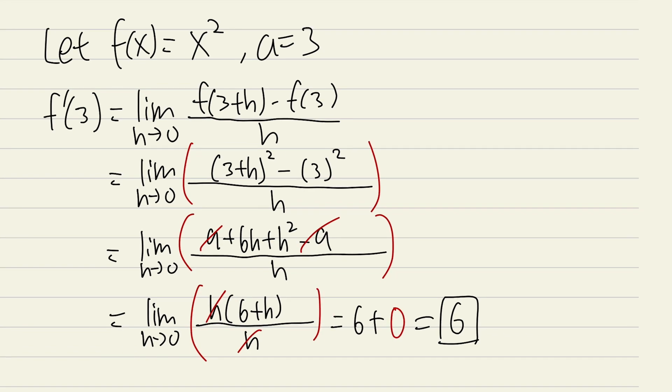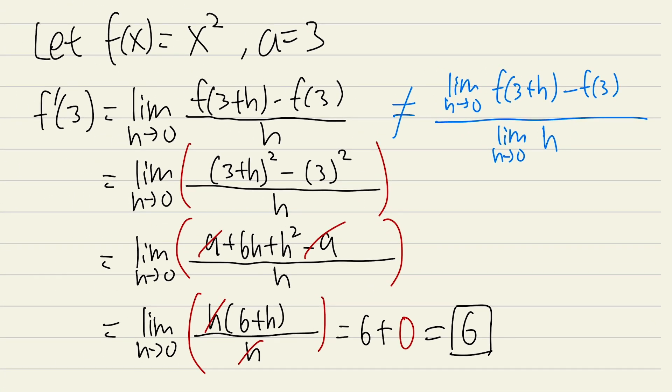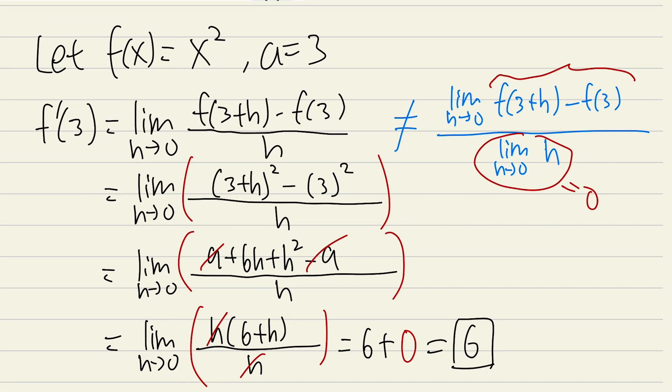However, if earlier we were doing the limit as h approaching 0 of f of 3 plus h minus f of 3 over the limit as h approaching 0 of h, well, they are not equal because you see that you will really have to focus on what the top is and what the bottom is. This right here gives you 0 right away. Also, you can simplify this, you will get the top, like that.